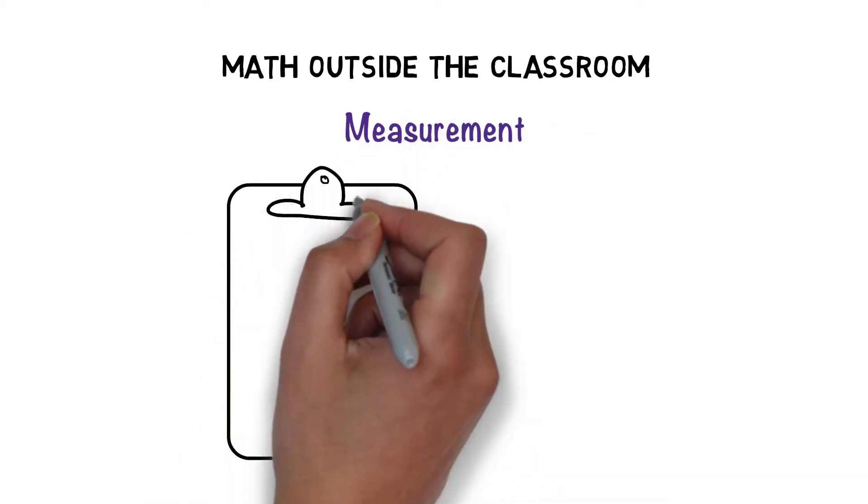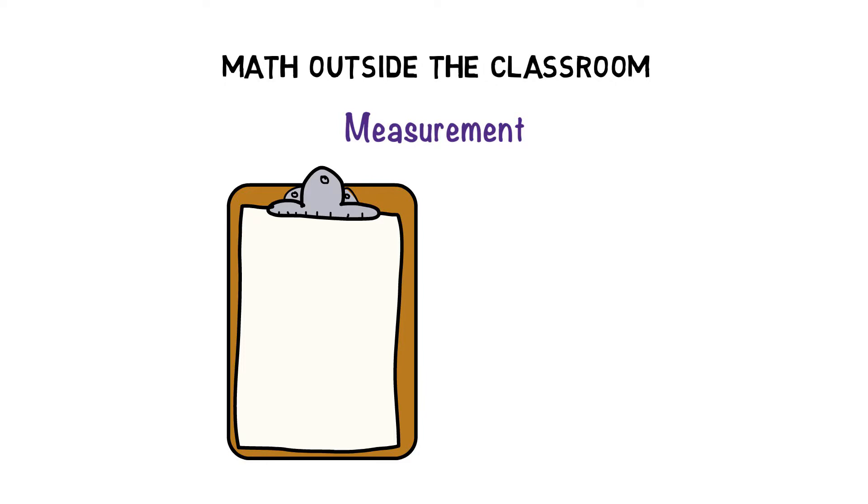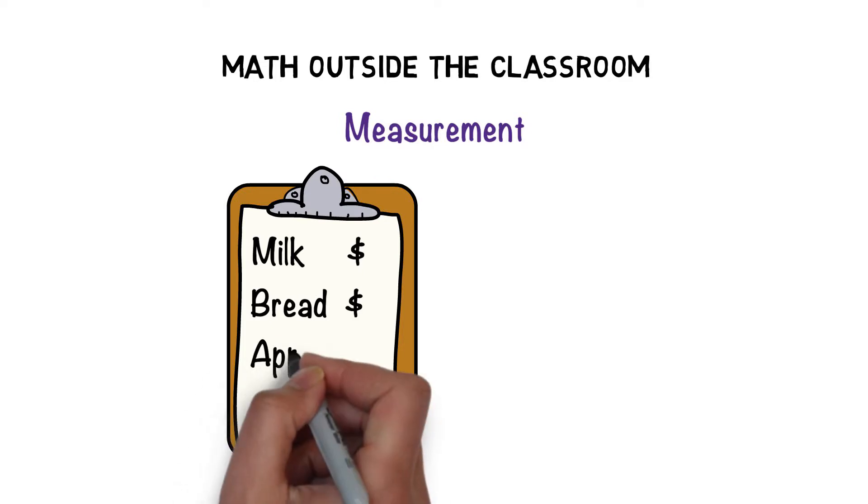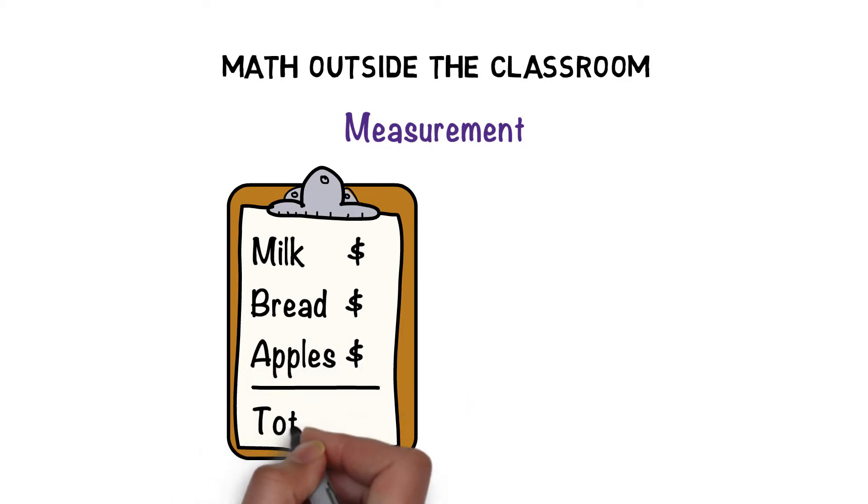Measurement. Next time you are at the grocery store, have your child keep a running total of all the items in the cart. Compare their total with the actual total to see how close they got.